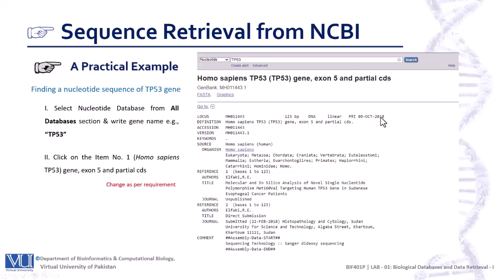The locus section tells you about the accession number. This gene consists of 123 base pair nucleotides and it is a linear sequence. Here is another field called version. Whenever we submit a sequence, if we later find something incorrect or want to update it, a new version is created. This is the first version — you can see after the accession number it is written dot one, meaning this is the first version and the sequence has not yet been updated.